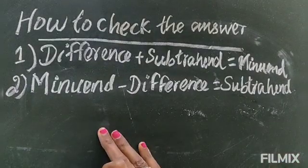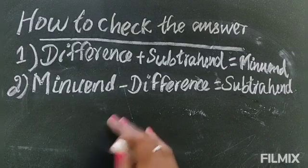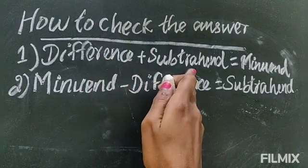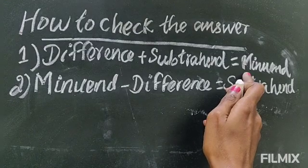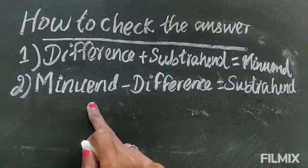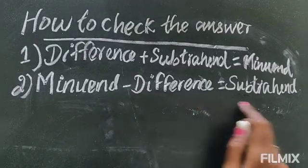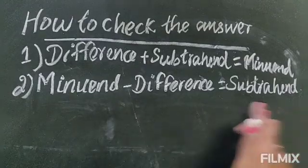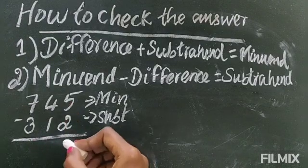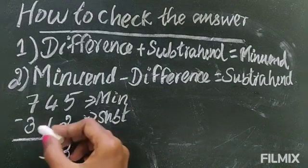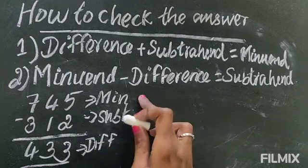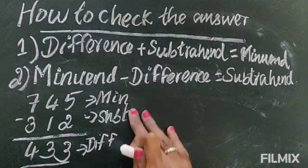How can we check the answer? This is what we are going to see. This is not asked in the exercise but you can check your answer using this. What we can do: the difference and the subtrahend — that means the second number — both if you add you will get the minuend, that means the first number. In other way, the minuend is there, from there you minus the difference, then you will get the second number. Let me explain with a small example: here I have the three-digit number 745 minus 312. 5 minus 2 is 3, 4 minus 1 is 3, 7 minus 3 is 4. So this is the difference. The first number is the minuend, the second number is the subtrahend, the answer is the difference.